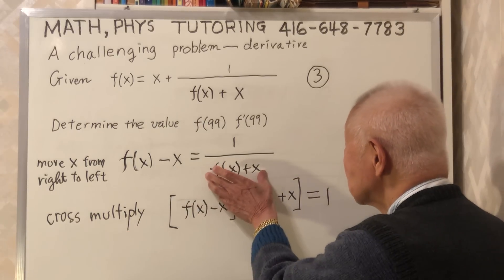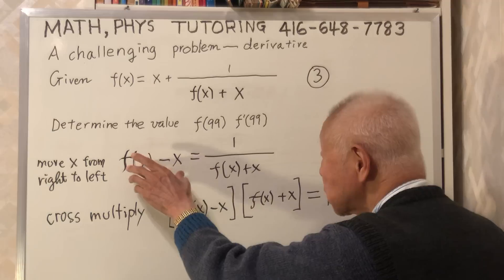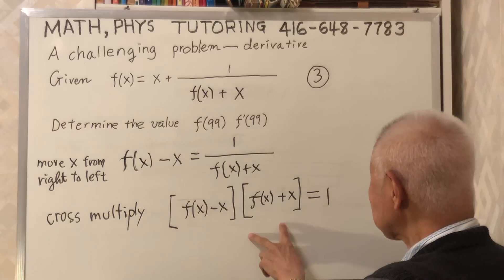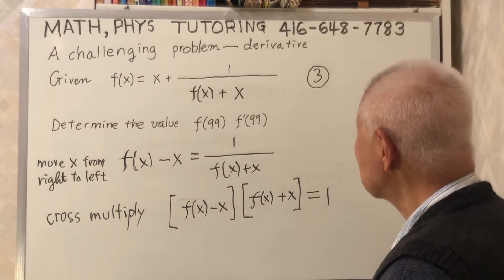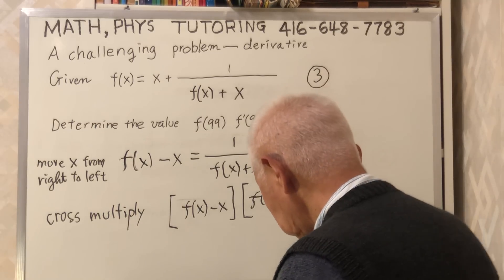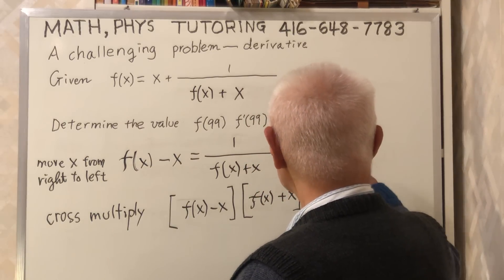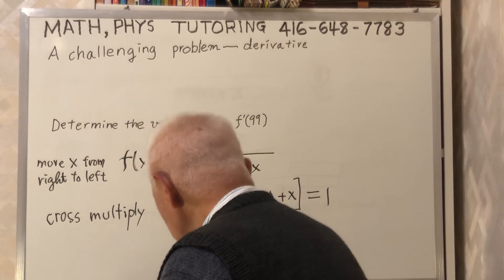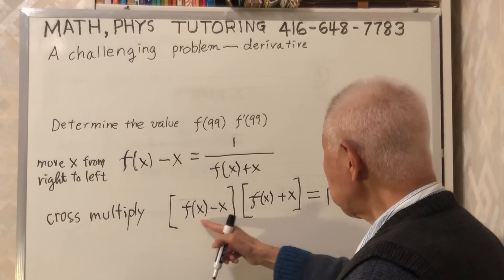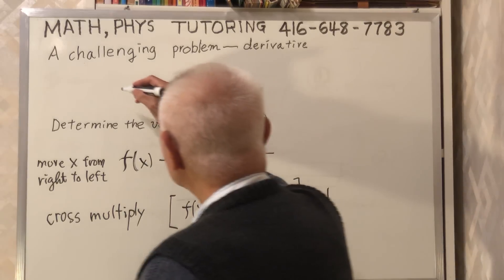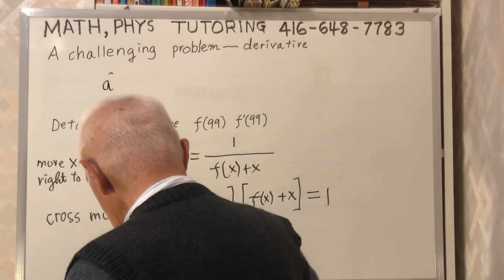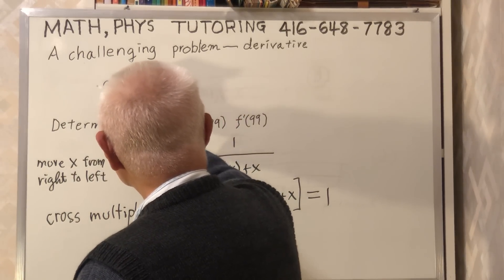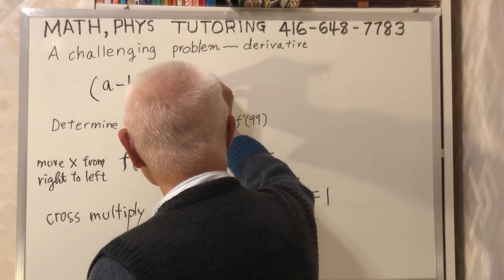Cross-multiply — move this part to the left-hand side and multiply. This times that equals 1. I need more space, so I'll erase that. Look: A minus B, times A plus B, is equal to 1.